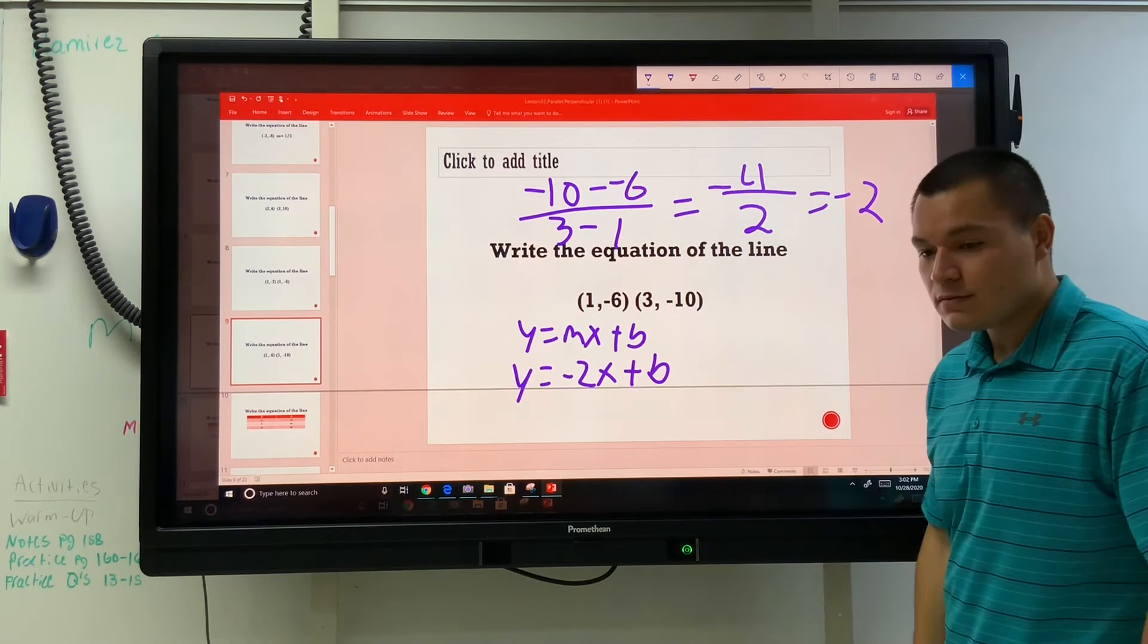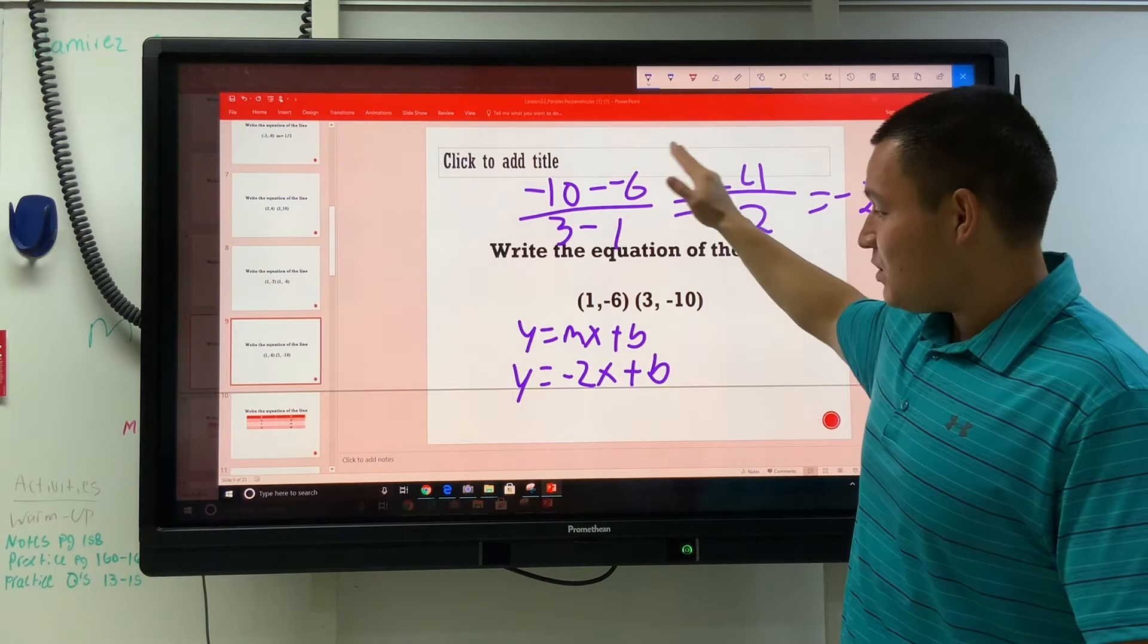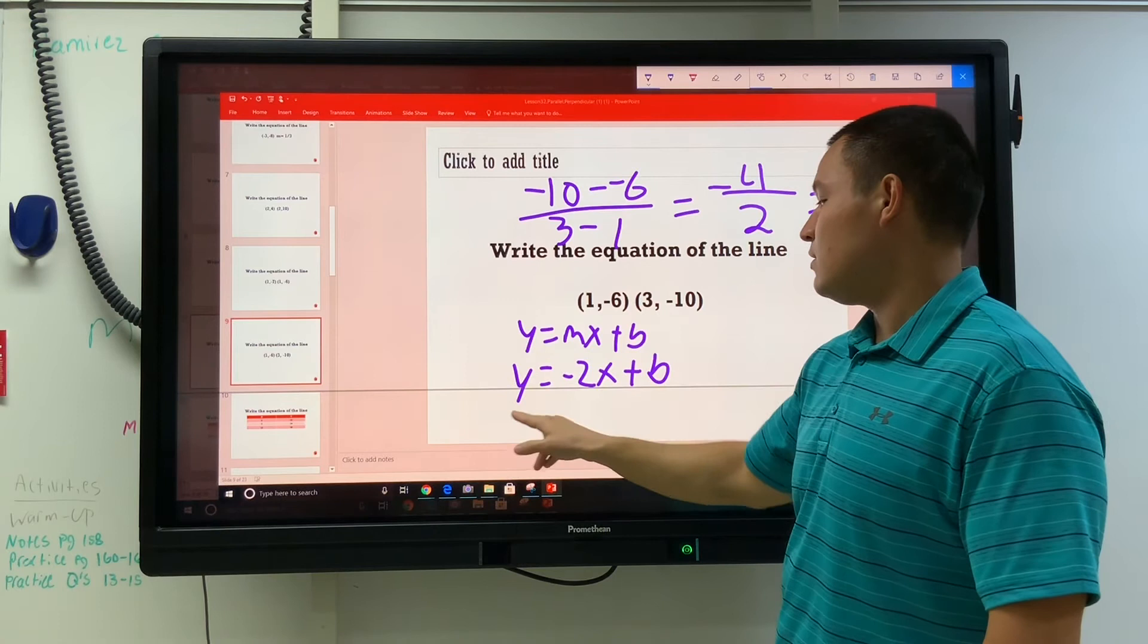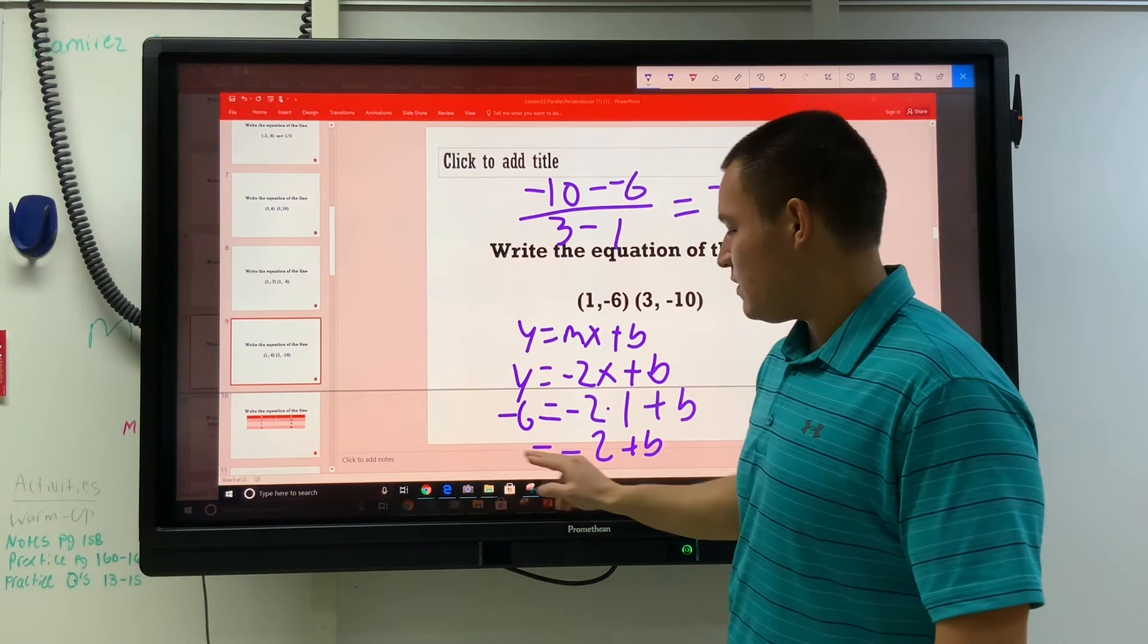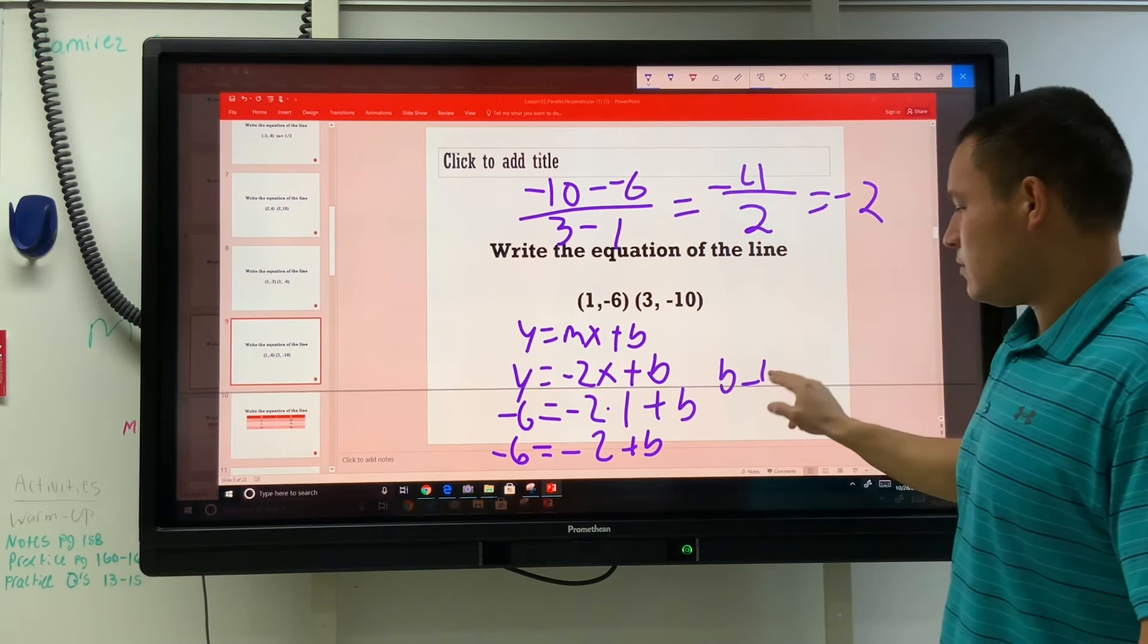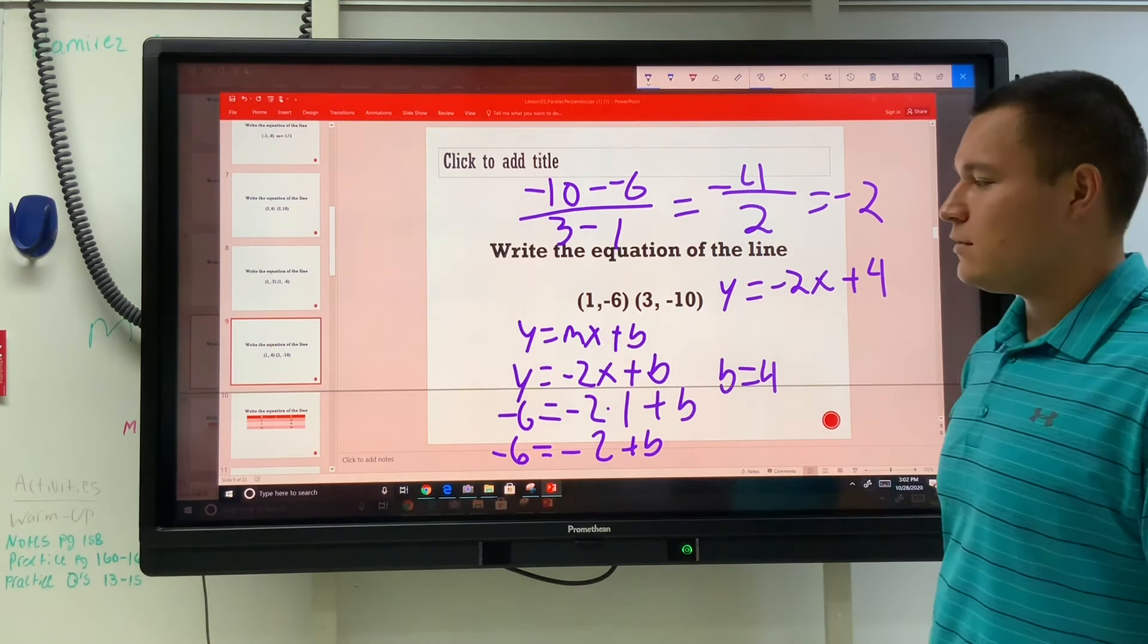It really doesn't take a whole lot of thinking if you just write everything down. It's only when you don't write things down that you have to think really hard. We found the m, so we put it for m. To find b, take an x and a y, put them for x and a y. Negative 6 is equal to negative 2 times 1 plus b. Negative 2 plus b equals negative 6. Add that 2 over there. b is 4. That means y is equal to negative 2x plus 4. I wrote plus 4, but that should really be negative 2x minus 4.